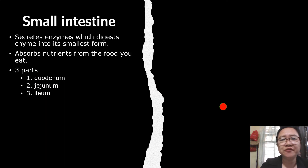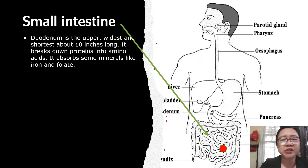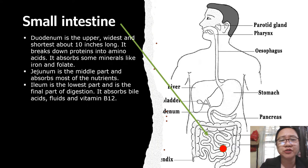From the stomach, the food moves down to the small intestine. The small intestine secretes enzymes which digest chyme into its smallest form and absorbs nutrients from the food you eat. There are three parts: the duodenum, jejunum, and ileum. The duodenum is the upper, widest, and shortest — about 10 inches long — and breaks down proteins into amino acids, absorbing minerals like iron and folate. The jejunum is the middle part and absorbs most of the nutrients. The ileum is the lowest and final part of digestion, absorbing bile acids, fluids, and vitamin B12.